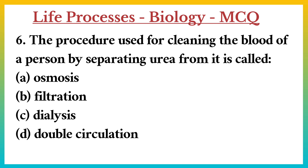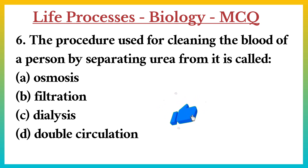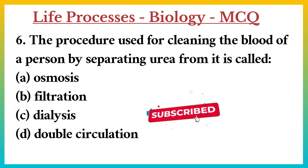Question number 6. The procedure used for cleaning the blood of a person by separating urea from it is called: A. Osmosis. B. Filtration.